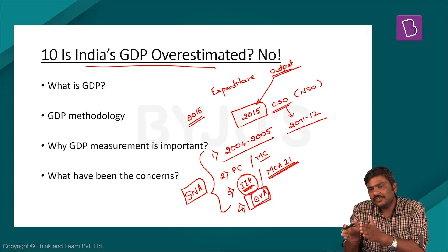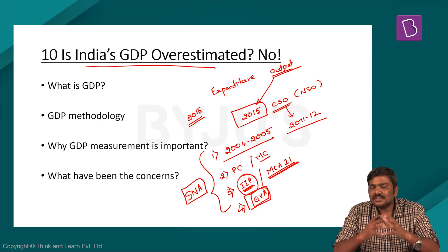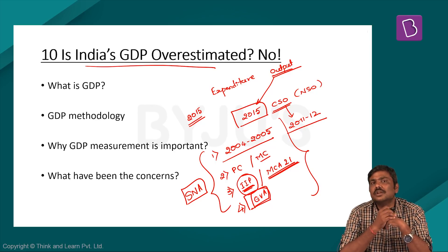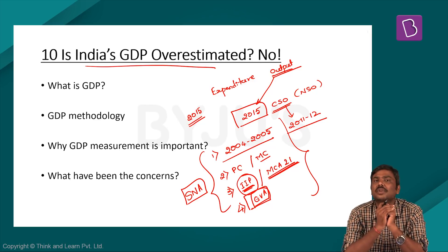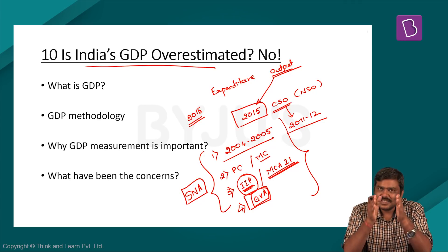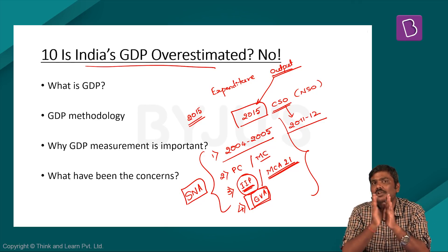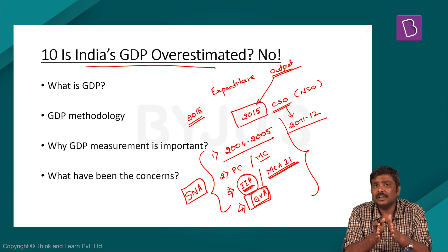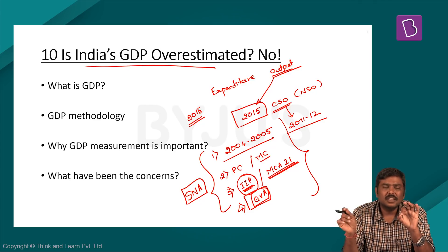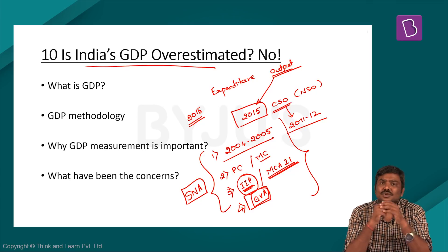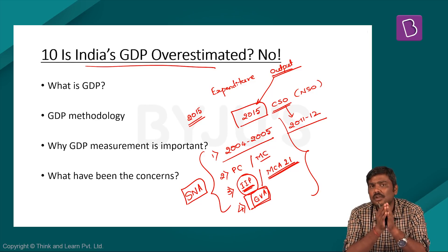After shifting from the old methodology to the new one, various experts raised concerns about the GDP calculated using this methodology. Their argument is simple: in certain situations, the GDP calculated has been overestimated. When the new methodology was introduced, some experts compared the GDP growth rate for the same period under both the old and new methodologies. They found a huge disparity — in certain quarters, the difference in GDP growth rate for the same period has been more than 200 basis points.